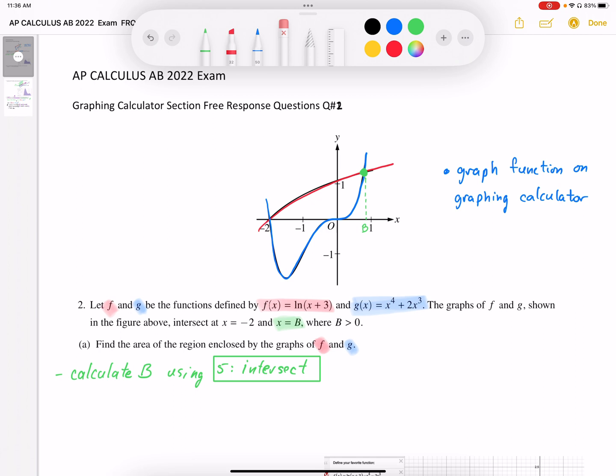The graphs intersect at x = -2, which we can see is where the two graphs cross, and x = b, which is an unknown point. Question part (a) says: find the area of the region enclosed by the graphs of f and g.